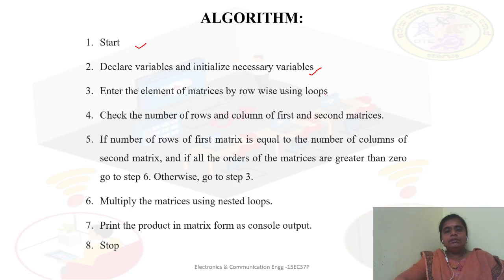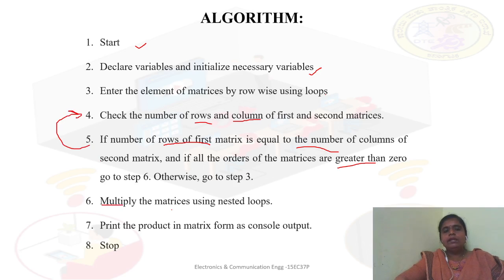Then we check how many rows and columns are there for both the matrices. We check the condition that the number of rows and columns should be the same and they should be greater than 0. If this condition is true, then we go for the multiplication. Otherwise, we ask to re-enter all the elements and the orders of the matrices. After multiplication, we print the resultant matrix — the product of the matrices will be displayed.